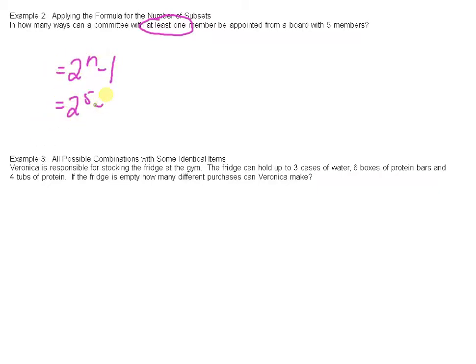So I get two to the five minus one, because from the first person we either choose or don't choose. Second person choose or don't choose. Third person choose or don't choose. Fourth person choose or don't choose. Fifth person choose or don't choose. But we have to choose at least one, so that's where we subtract that one.